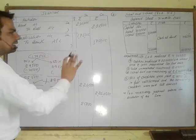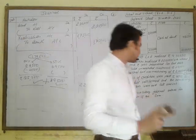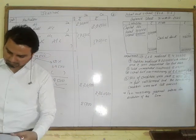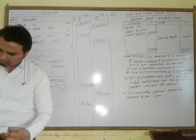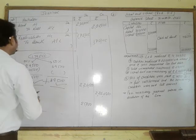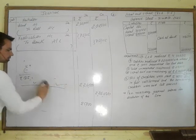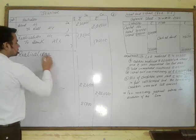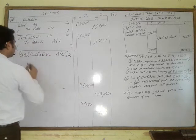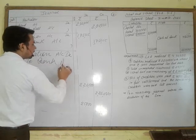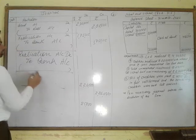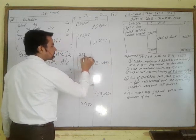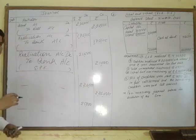For EPF — Employees' Provident Fund — no adjustment was given in the question, so we pay the full amount of ₹21,000. Entry: Realization Account Debit to Bank Account, ₹21,000. Bank balance decreases, so Bank Account is credited.